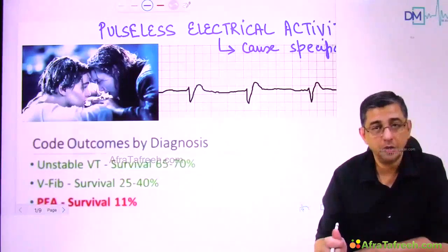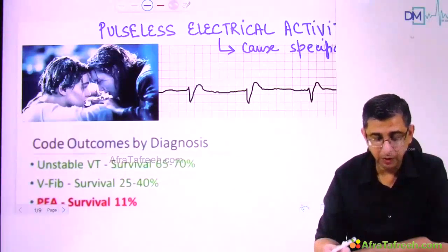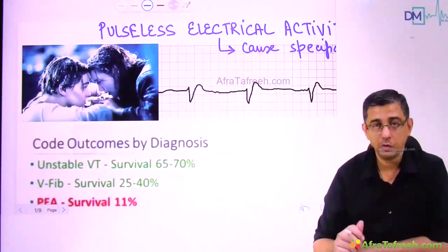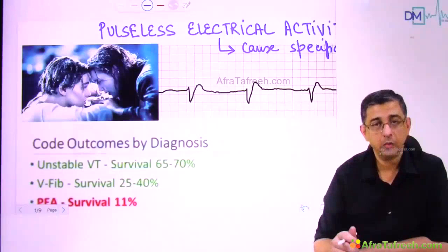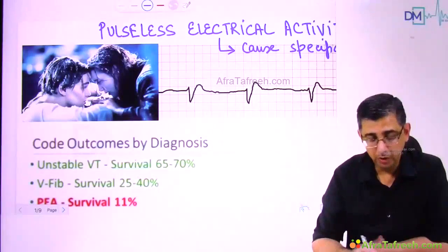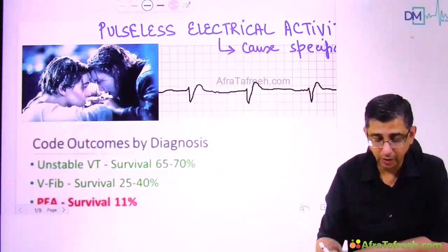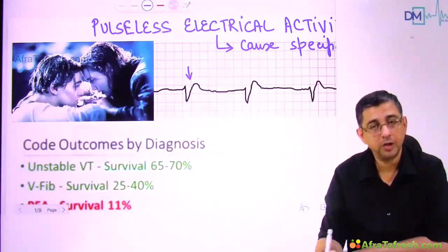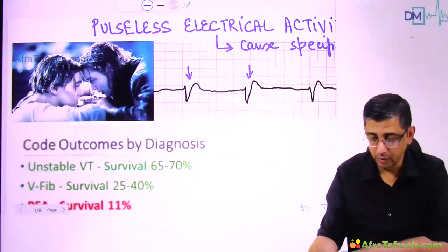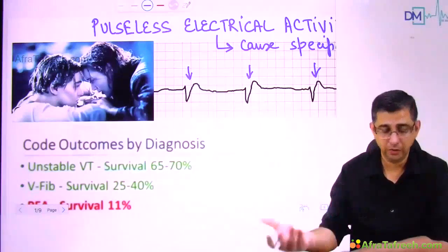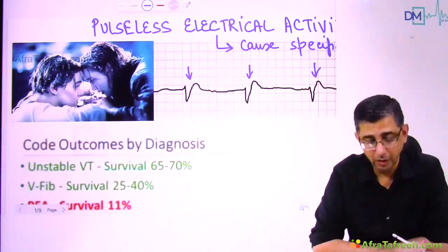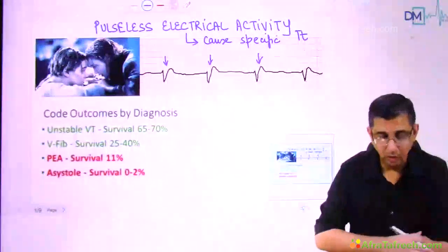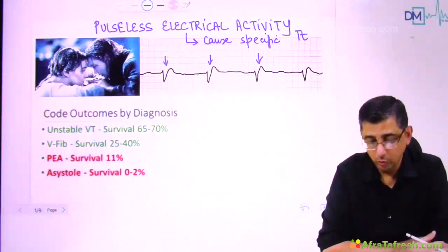In that scene from Titanic, Jack is totally pale, his mentation is affected, he cannot recognize Rose properly, his lips are turning blue, and his heart is gradually slowing down. Hypothermia is also a cause for development of pulseless electrical activity. Before he expired, he would have had relatively broad complex QRS complexes, the heart would have gradually slowed down, converted into a flatline ECG, and loss of brain circulation would have meant a definitive expiry.